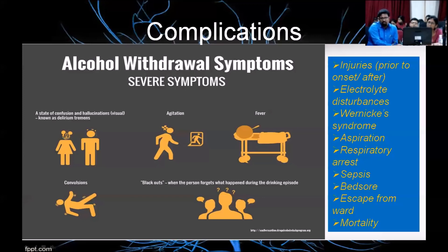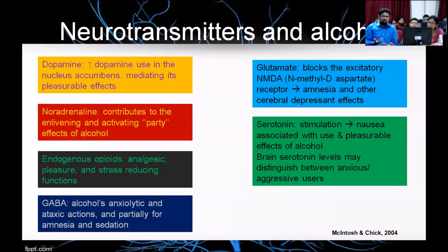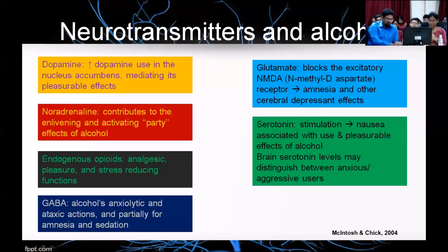We won't spend too much time on the neurotransmitter slide. These are basically some of the neurotransmitters affected by alcohol: dopamine, noradrenaline, opioids, GABA, glutamate, and serotonin. Withdrawal is caused by an imbalance between the activity of these various neurotransmitters, simply because while alcohol increases some levels, it interferes with others. When alcohol is stopped suddenly or reduced, there is an imbalance in current neurotransmitter functioning.